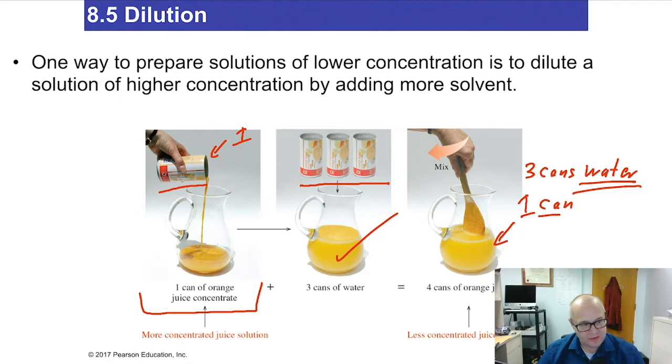So the amount of solute in the dilution didn't change. We had one can of frozen concentrated orange juice, and we end with one can of frozen concentrated orange juice. It's just that by adding water, adding more solvent, the solute is spread over a larger volume, and that's a dilution. So in a dilution, you add volume, you add solvent. When you do that, concentration goes down. So a dilution causes the concentration of something to go down.